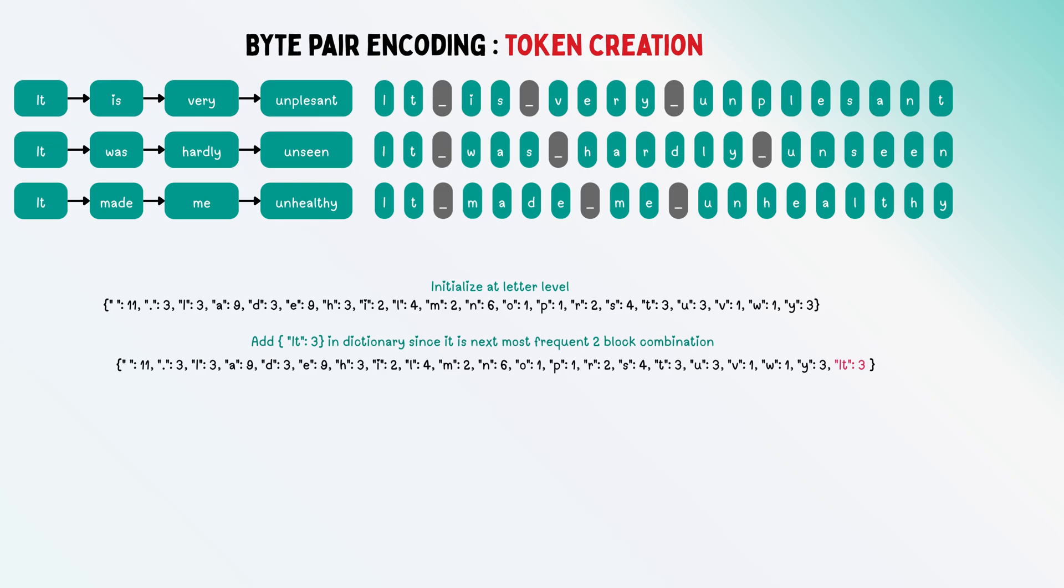Combine the most frequent pairs. For example, 'it' appears in all three lines, so add it to the dictionary because it's the most frequent combination. Keep adding frequent combinations until you hit the pre-decided dictionary size. This is called byte pair encoding, a very useful technique.